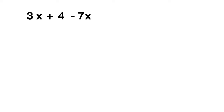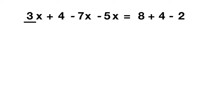Let's look at another equation: 3x plus 4 minus 7x minus 5x equals 8 plus 4 minus 2. First we combine all terms on the left that have x: 3x, minus 7x, and minus 5x. 3 minus 7 minus 5 gives us negative 9, so we have negative 9x. Then on the left side we also have plus 4.